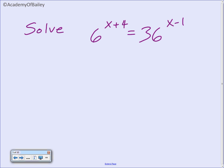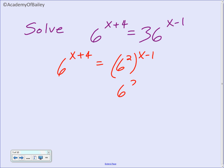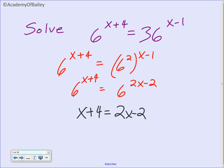Let's see if you can do this one on your own. Hit pause, then play the video when you're finished. We have 6 to the x plus 4 on the left side. On the right side, 36 is 6 squared, so we have 6 squared to the x minus 1 power, which gives us 6 to the 2x minus 2. We take log base 6 of each side to cancel out and set the exponents equal. Adding 2 to both sides gives 6, and subtracting x from both sides gives x equals 6.